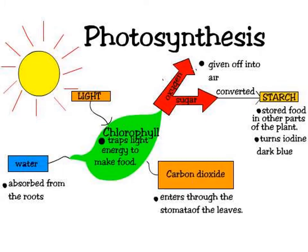Here's a more colorful, detailed graphic of photosynthesis. Water absorbed from the roots goes up into the leaves. Light from the sun is trapped by the chlorophyll. Carbon dioxide enters through the stomata of the leaves. Chemical reactions in the chloroplasts produce oxygen and sugar. The oxygen is given off into the air as a waste product. The sugars are converted into starch — more complex molecules — which becomes stored food in other parts of the plant. When you eat a vegetable, that starch is how you get glucose. Starch turns iodine dark blue, which is an interesting experiment you can do at home.